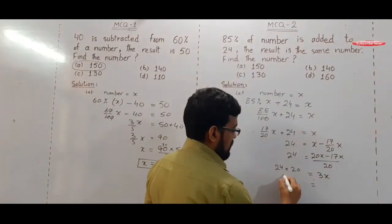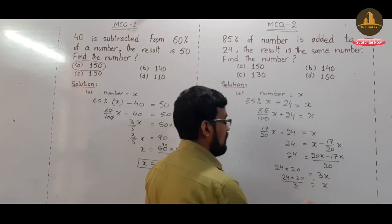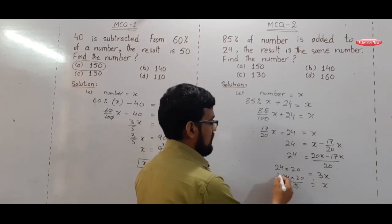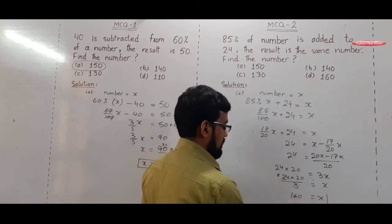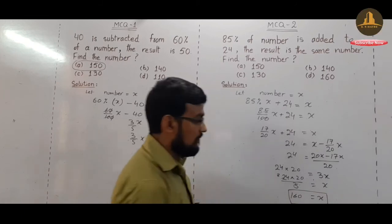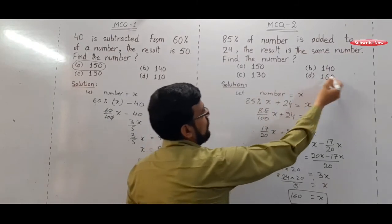3 multiplied becomes divide. After cancellation, 8, 20, and 160. So final result X equals 160. So final result X equals 160 and 160 is option D.